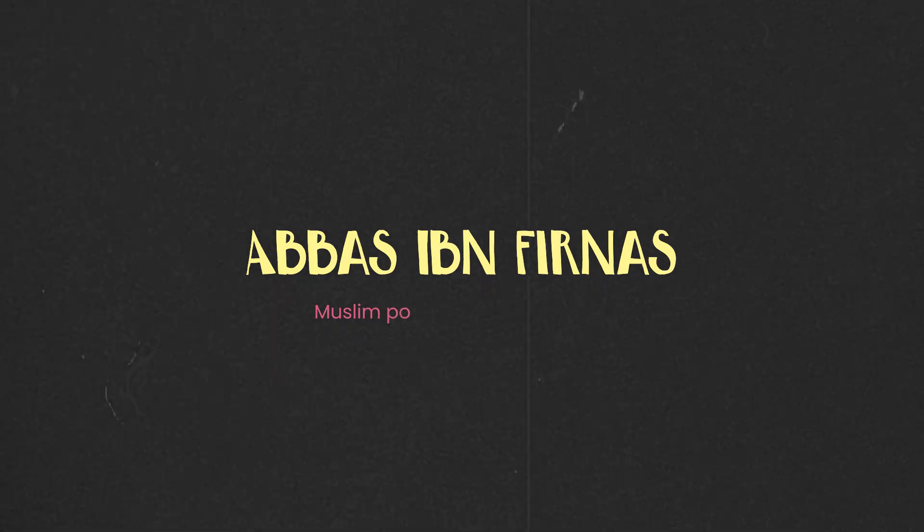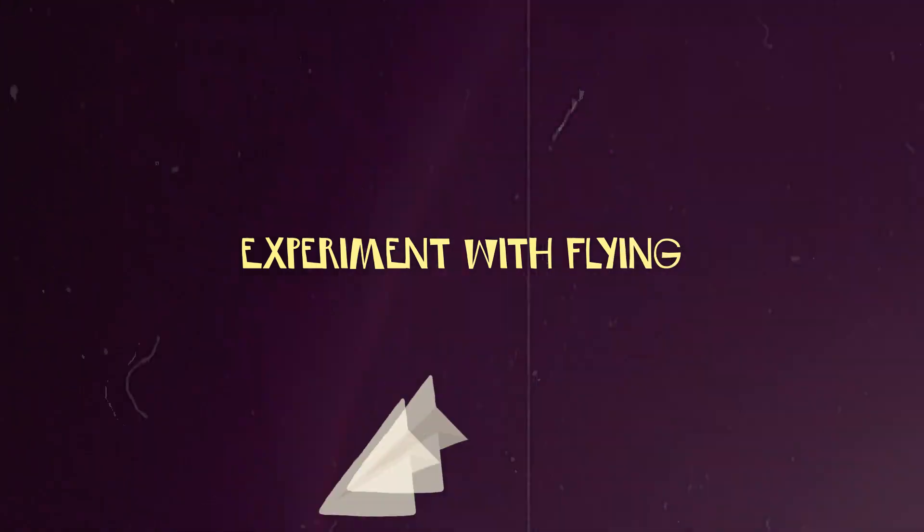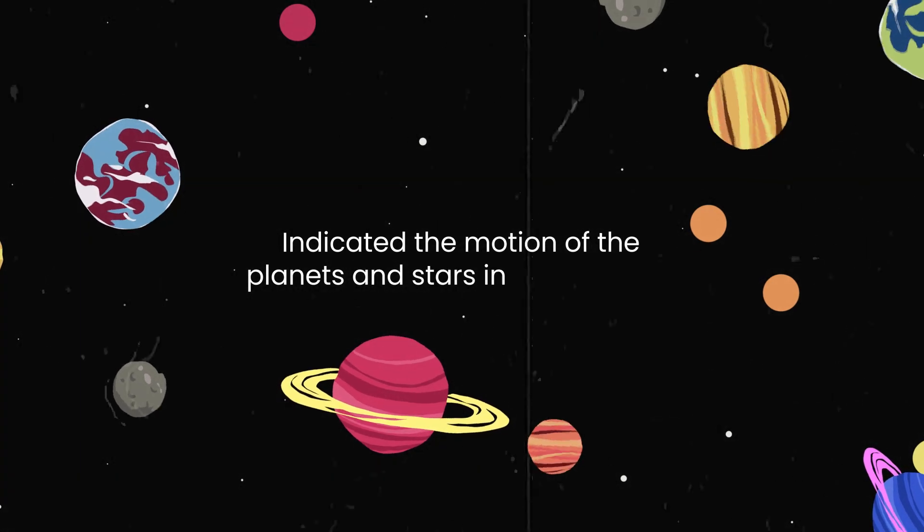Abbas Ibn Farnas was a Muslim polymath and engineer. He was the first human to experiment with flying. He also constructed a device which indicated the motion of the planets and stars in the universe.